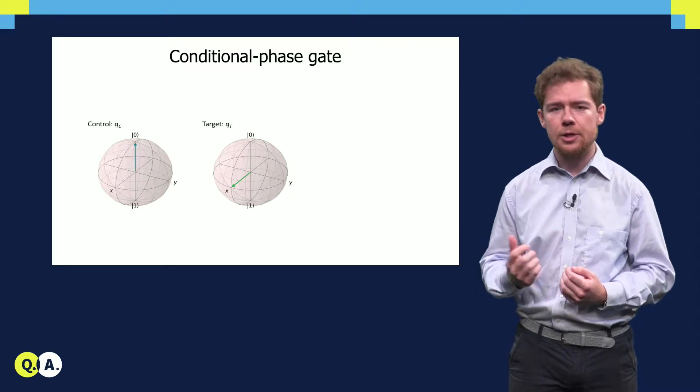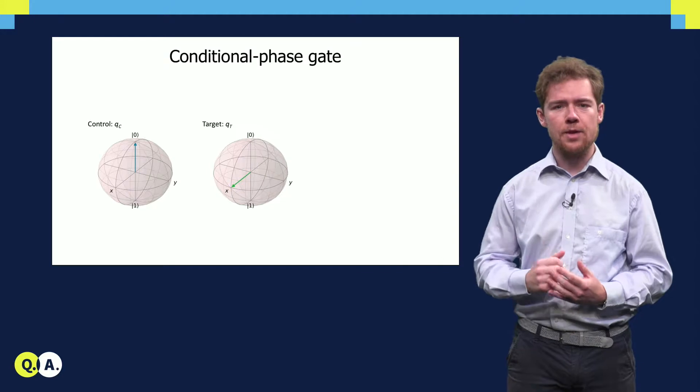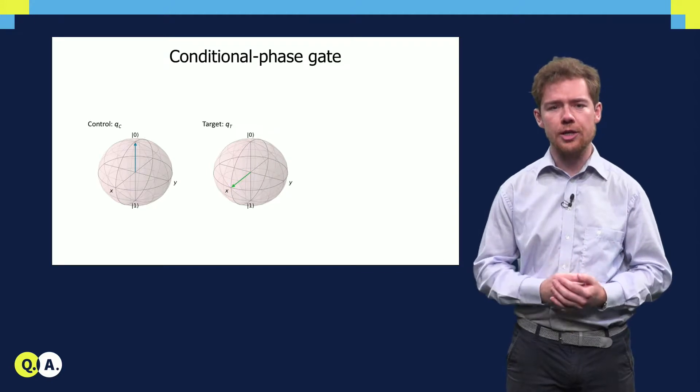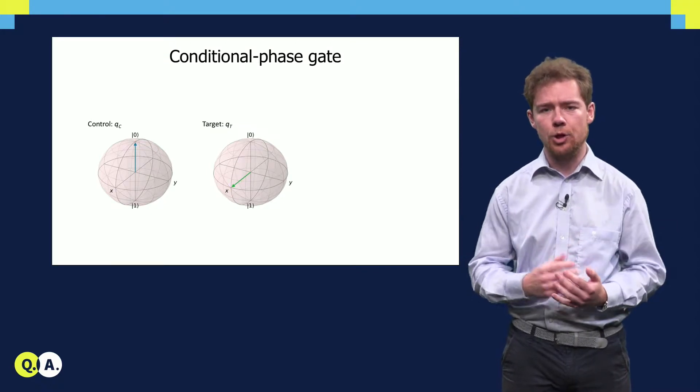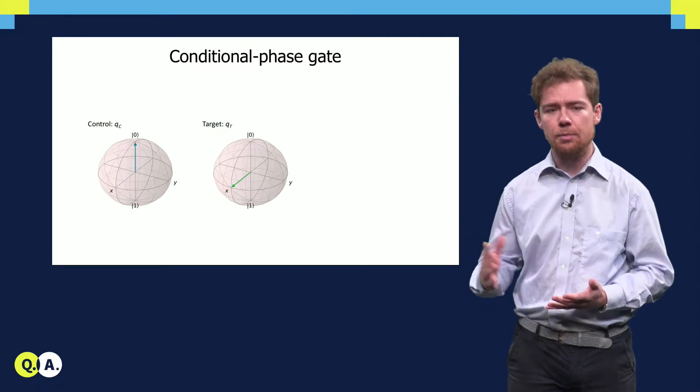As an example, let us consider two qubits: a control qubit QC, starting in either the ground or the excited state, and a target qubit QT, starting in the plus state.